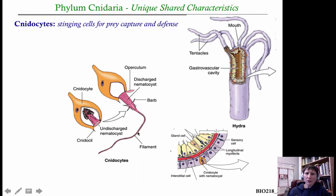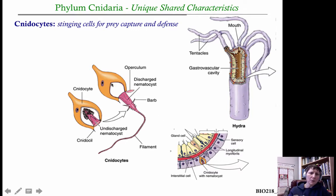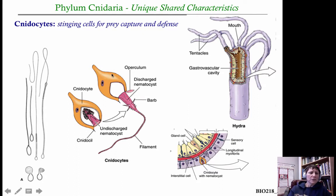Once the cnidocil has been triggered, the nematocyst pops open — it's basically a type of harpoon. They often have barbs at the base; this is the filament. Many have toxins associated with them, so not only can they hurt the animal punctured by them, they can be quite toxic and very painful. After being used for defense or prey capture, the nematocyst is withdrawn, coiled back up, and closes back inside the cnidocyte. The cover that holds them inside is called the operculum.